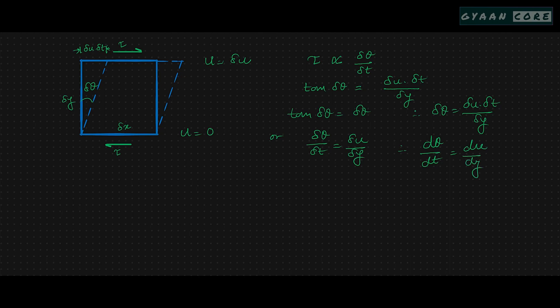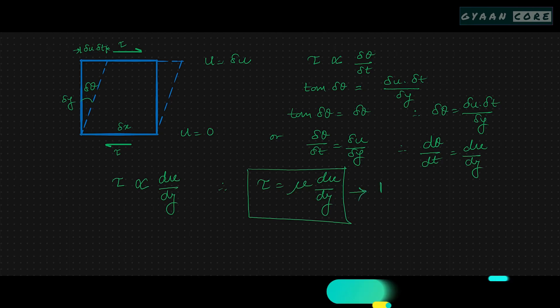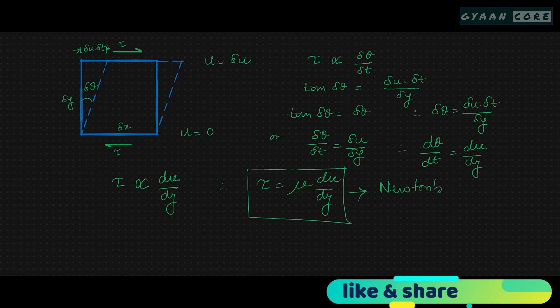Hence, we can say that the shear stress is directly proportional to the velocity gradient. The shear stress tau is proportional to du/dy. Therefore, tau equals to mu times du/dy, where mu is the constant of proportionality, which is called the coefficient of dynamic viscosity, or simply the viscosity. This expression is known as Newton's law of viscosity.